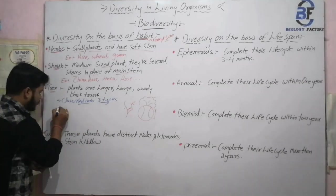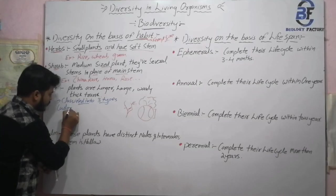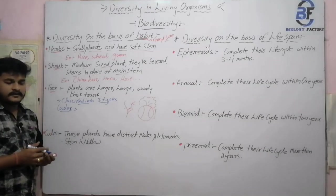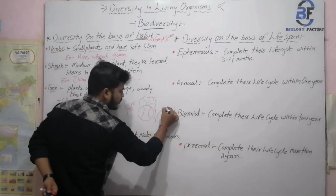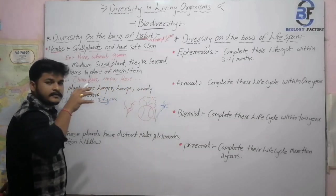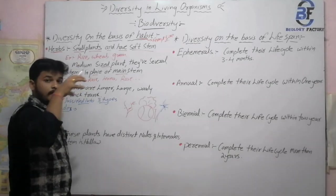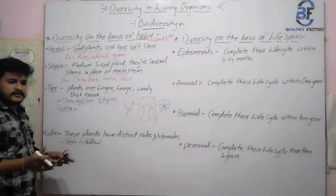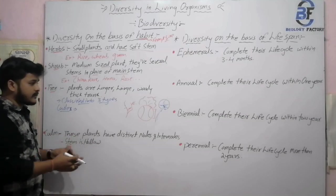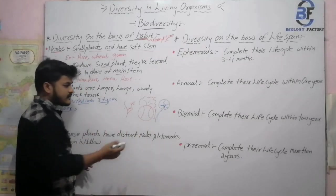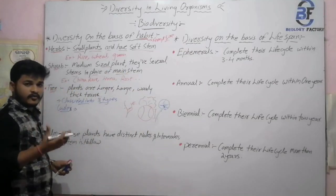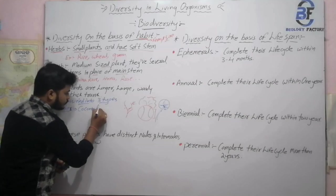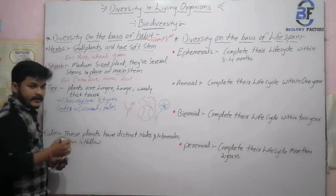The first type of tree is caudex. The basic example of caudex is the coconut plant. In caudex, the leaves and branches form a crown that is present at the top of the plant — so the crown of leaves and branches is on the upper stage. Along the long stem below, there are no leaves or branches. Coconut and palm are the two basic examples of caudex.